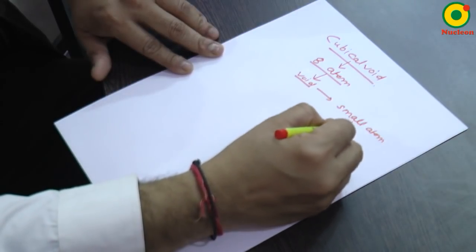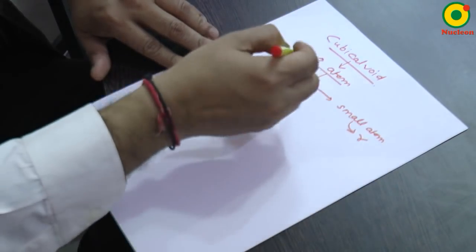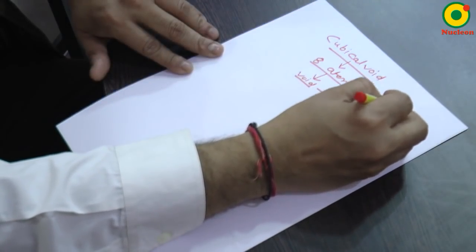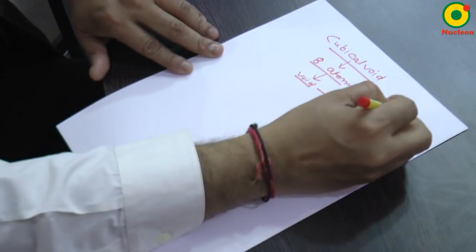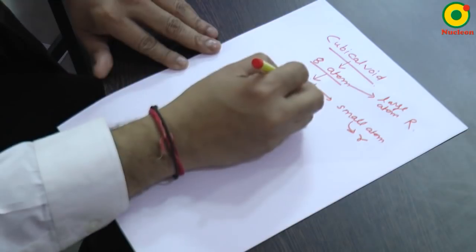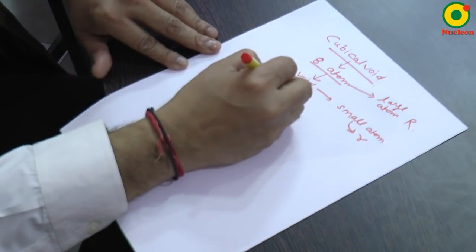Suppose the radius of a small atom is small r and the atoms of the large size, the large atom, it is having radius as capital R. So, cubical void is present in simple cubic structure.